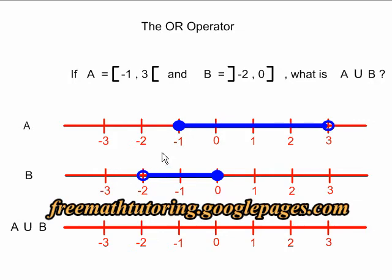Negative one and a half is not in A, but it is in B, so it will be in the answer. Two and a half is not in B, but it is in A, so it will be in the answer.